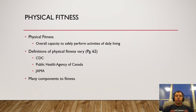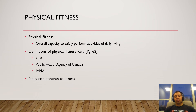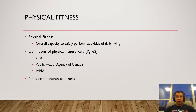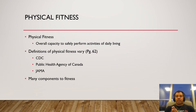The definitions of physical fitness vary — the text on page 62 lists several definitions. The definition we go with in this class is the overall capacity to safely perform activities of daily living. But depending on the context, physical fitness will vary. As a track and field coach, fitness for sprinters is very different from fitness for distance runners or throwers. There are many components to it.